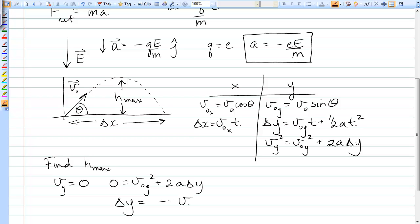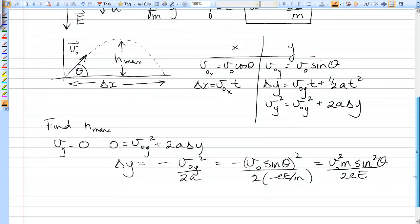So delta Y is negative V0Y squared over 2A, which equals negative V0 sin theta squared over 2 times negative eE over M. That's equal to, negatives are gone, V0 squared M sin squared theta over 2 little e big E. And that is indeed our H max.